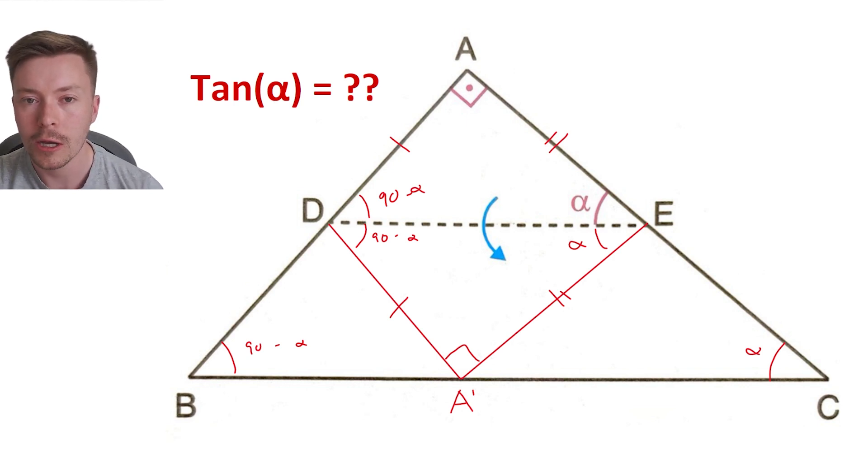Then using alternate angles again between the parallel lines, so one parallel line being the base of the triangle and the other the line that the top smaller triangle is folded over, using those you've got alternate angles.